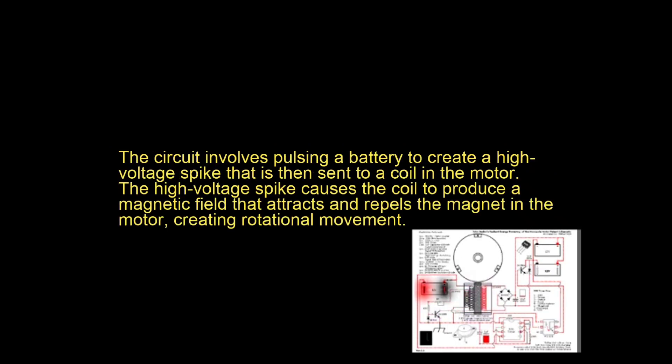The circuit involves pulsing a battery to create a high-voltage spike that is then sent to a coil in the motor. The high-voltage spike causes the coil to produce a magnetic field that attracts and repels the magnet in the motor, creating rotational movement.